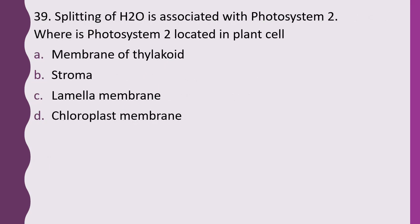Question 39. Splitting of water is associated with photosystem II. Where is photosystem II located in the plant cell? Options: membrane of thylakoids, stroma, lamella membrane, or chloroplast membrane. The correct answer is option A, membrane of thylakoids.